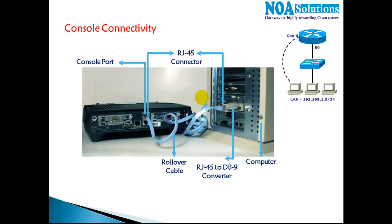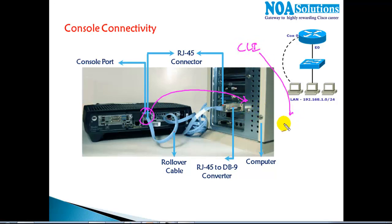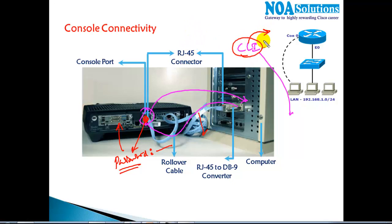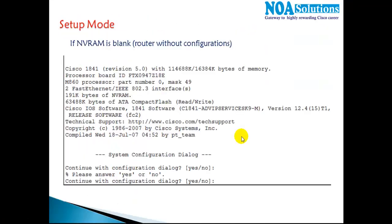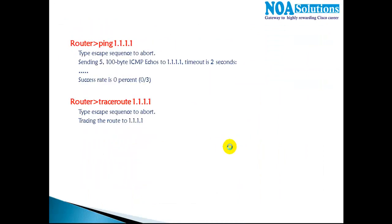This is what a console connection looks like — connecting to the COM port. When you want to enter the command line you open a HyperTerminal application. I want my router, if anyone tries to connect this way, to stop them at the console port and ask for a password. Only if the correct password is given should the user be able to see the command line. So I want to secure that console line by assigning a password.